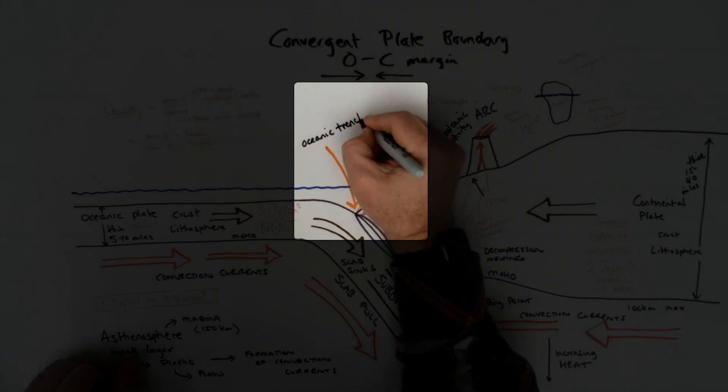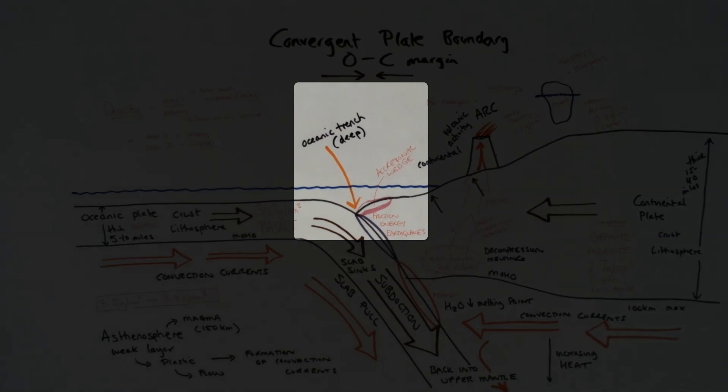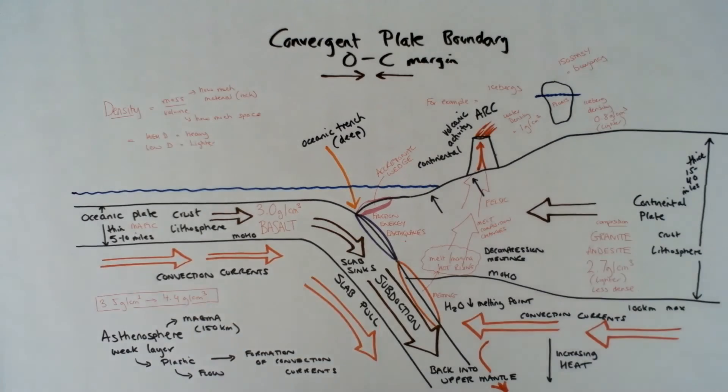And here we have the general overlook and holistic view of the convergent plate boundary, oceanic to continental.